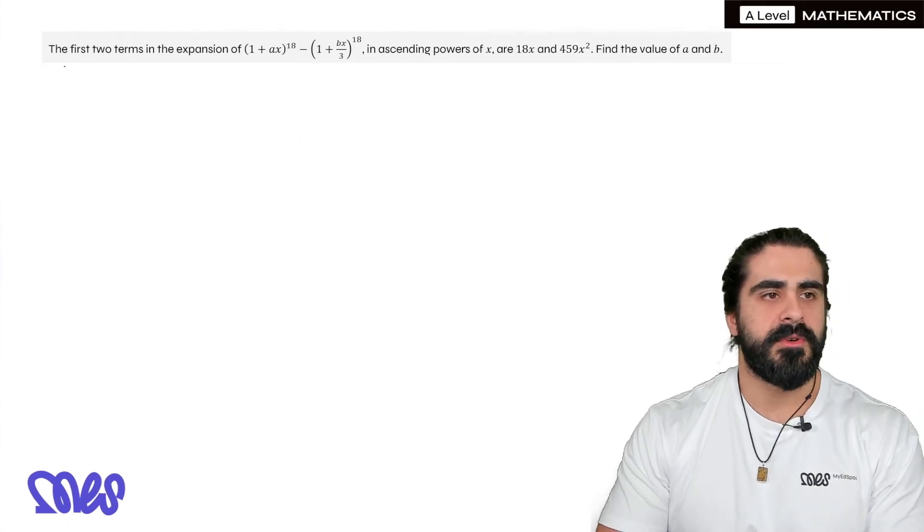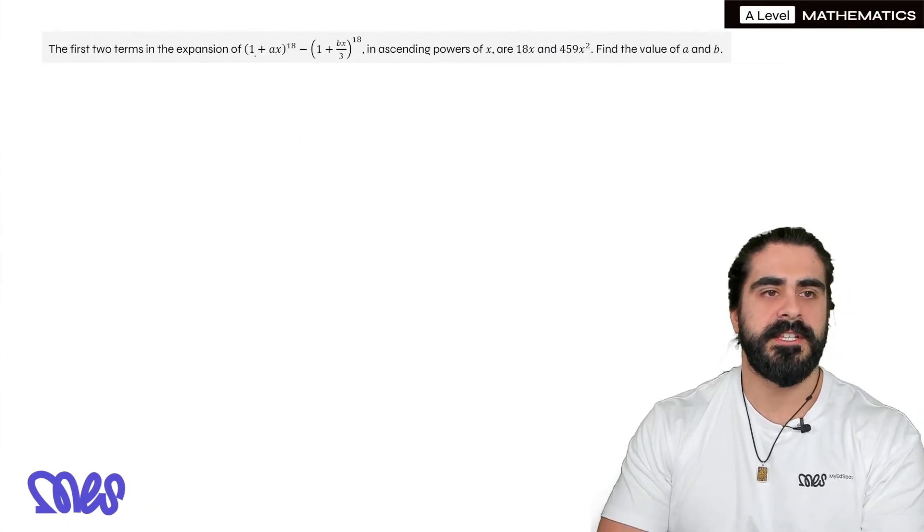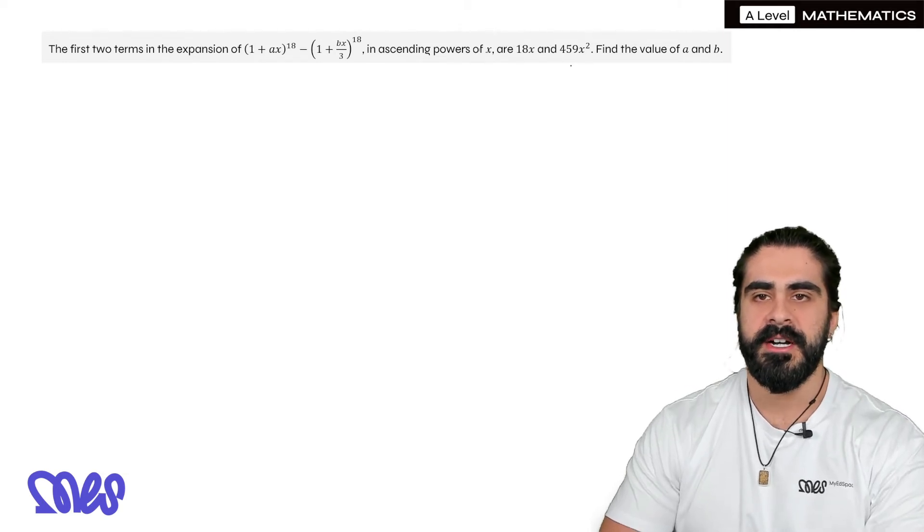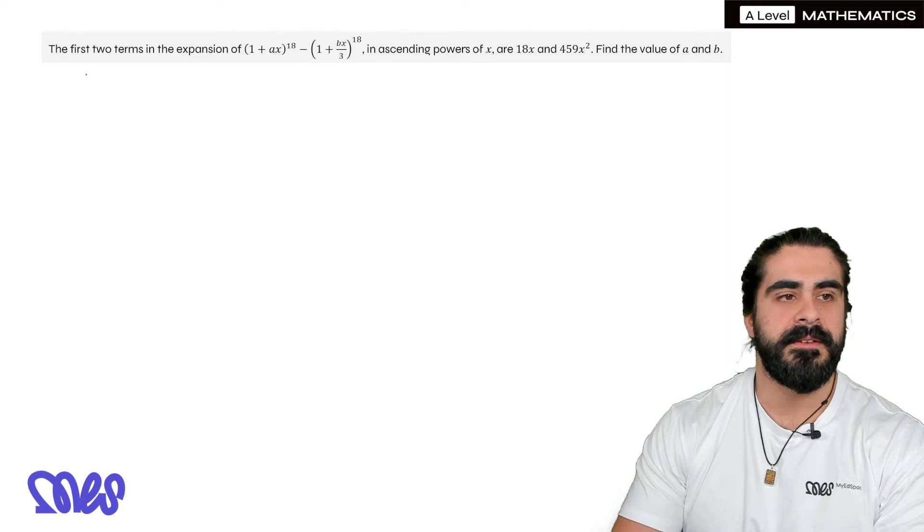Next exam type question says, the first two terms in the expansion of (1 + ax)^18 minus (1 + bx/3)^18 in descending powers of x are 18x and 459x^2. Find the value of a and b.